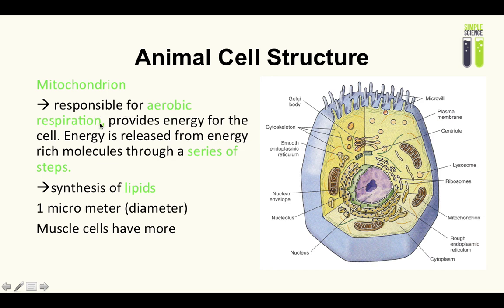The mitochondrion provides energy for the cell. Energy is released from energy-rich molecules through a series of steps — for example, glycolysis — which you'll learn in A2. A rough estimate of its size is around 1 micrometer in diameter. Muscle cells have more mitochondria because they require more energy.